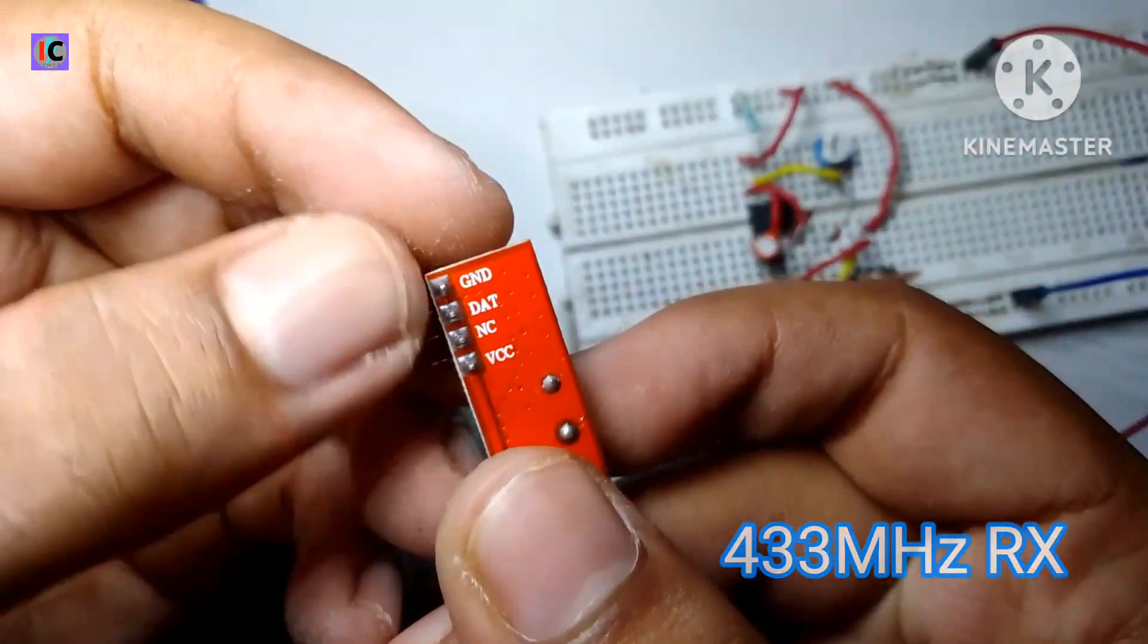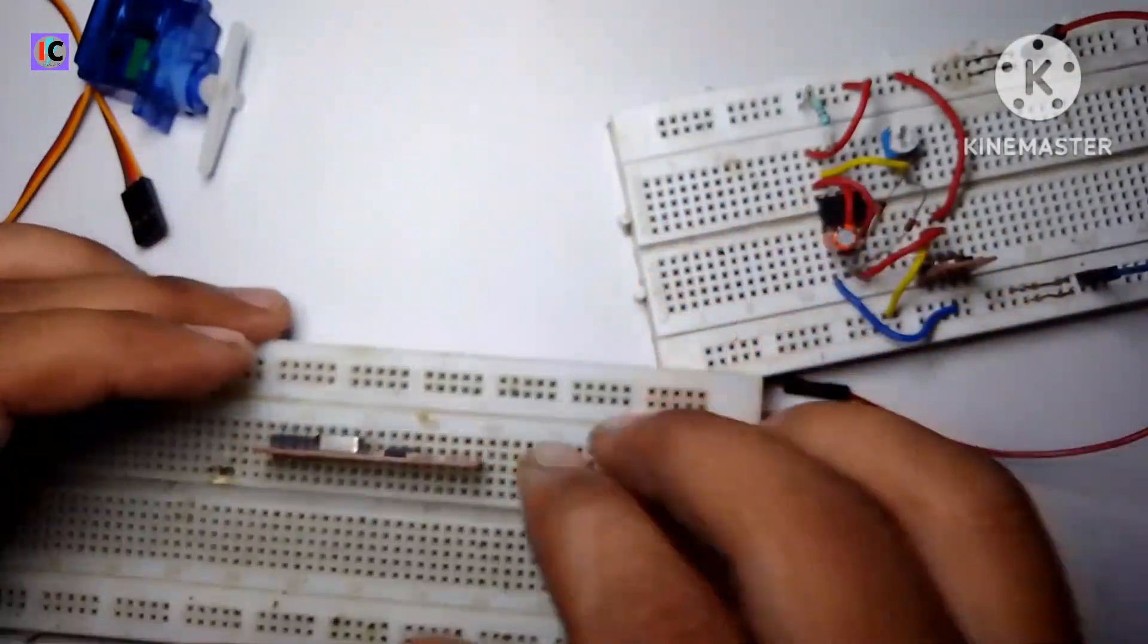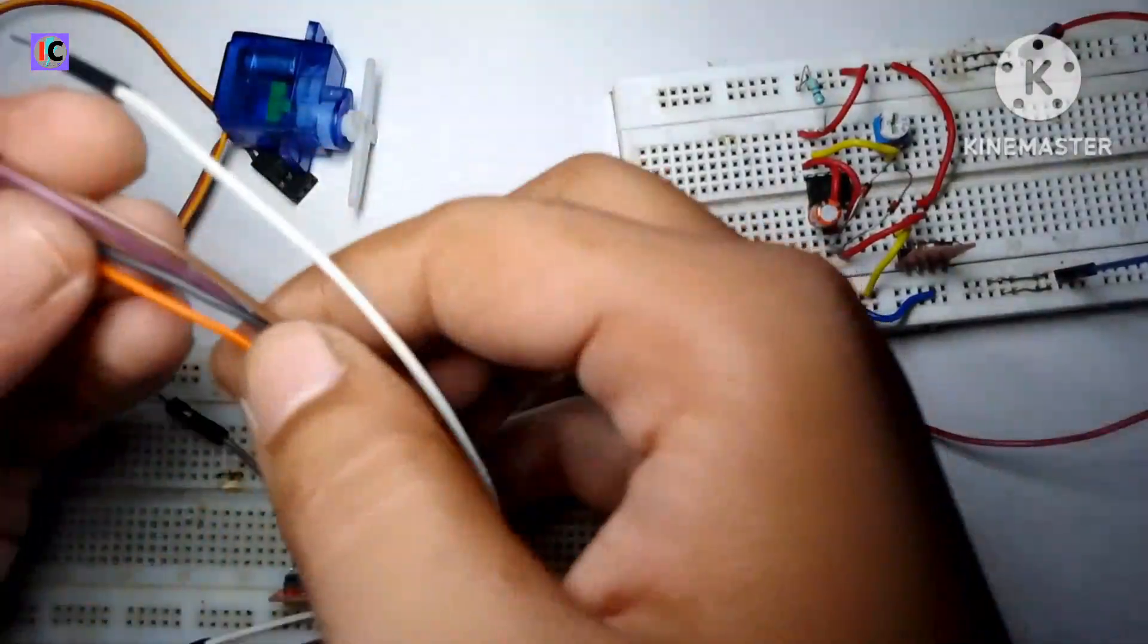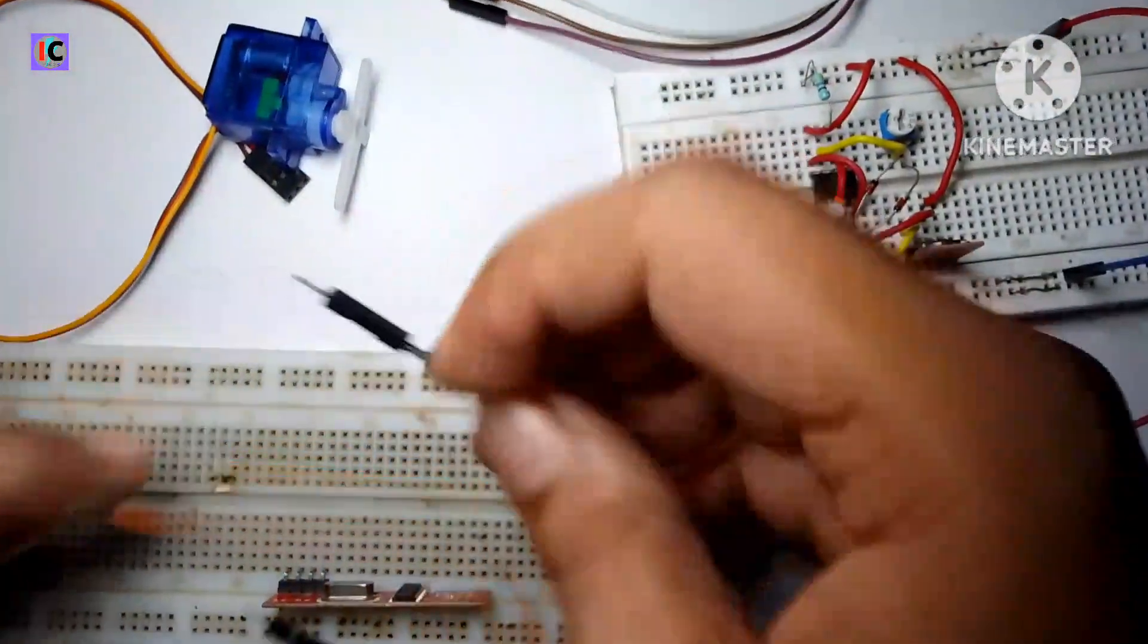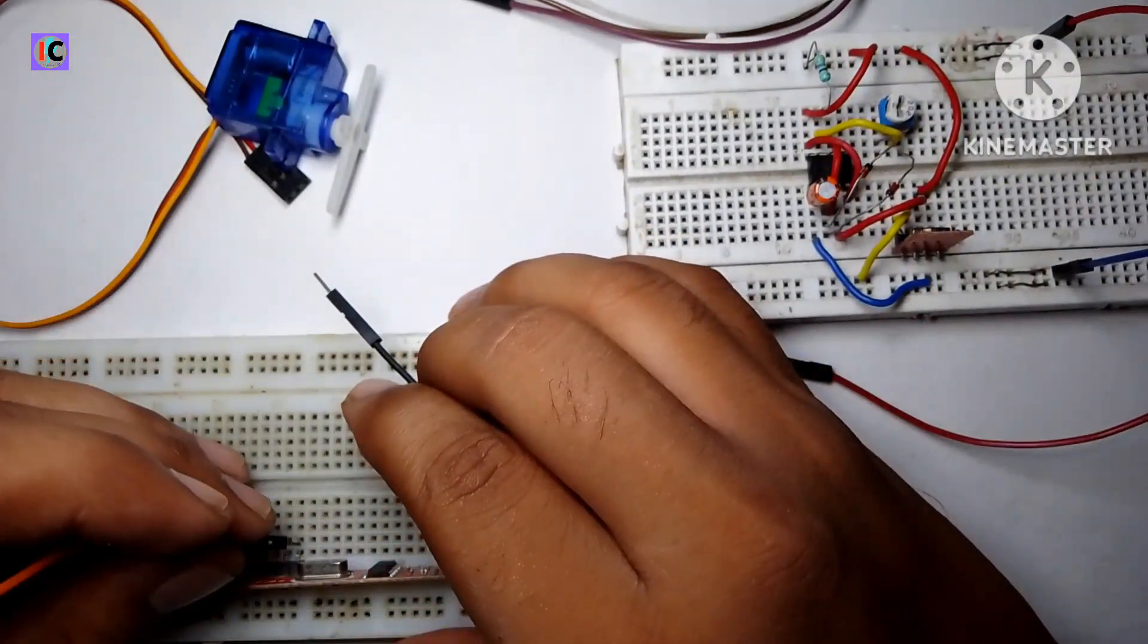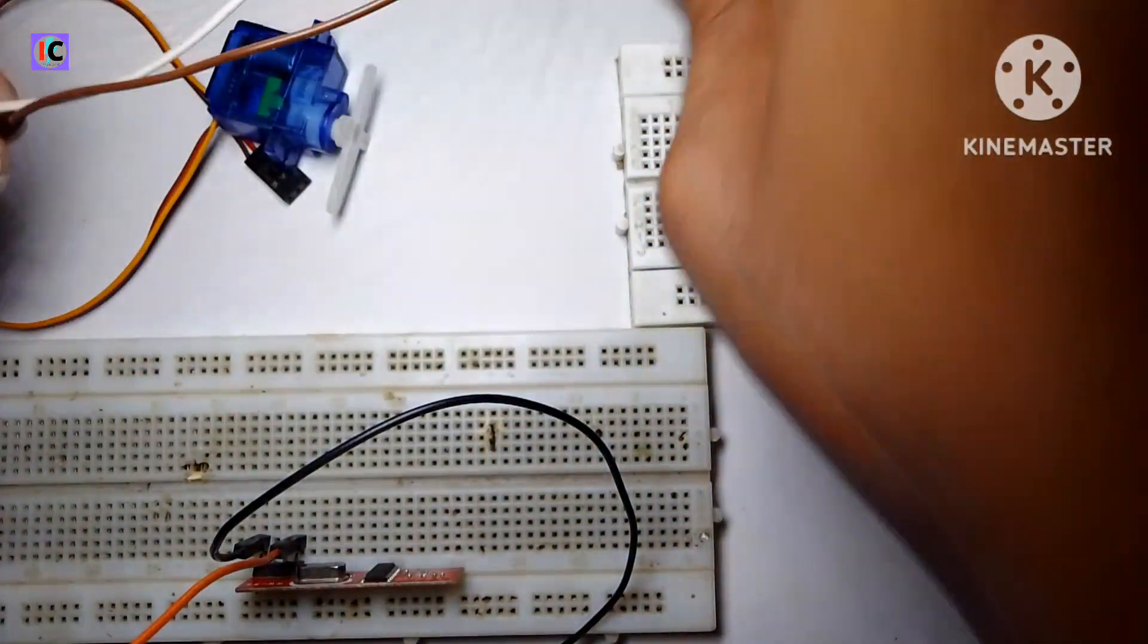The receiver circuit is very simple. Just take this RF receiver module and connect its respective power supply pins, that is ground and 5 volt pin. Make sure this module only supports maximum of 5 volts, so giving more than 5 volts will damage the module.